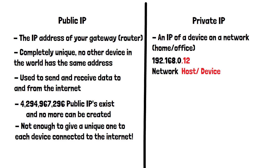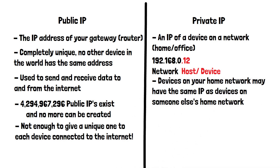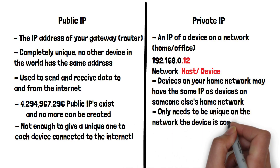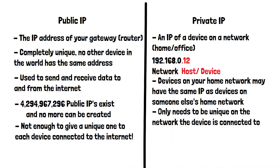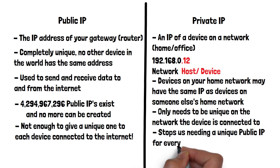If you visit a friend's house and check the IP addresses of devices on their home network, you may find the IP addresses are the same as some of your devices on your home network. Private IP addresses do not need to be unique as long as they are connected to different networks. This stops us needing to use a unique public IP for every device in the world, which would have caused us to run out of public IPs years ago.